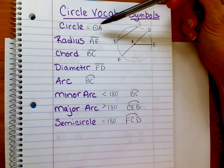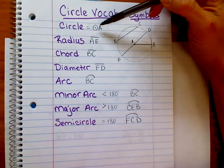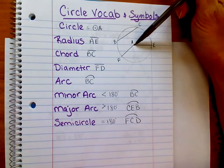When abbreviating circle, we write it as a little circle with a dot in it, kind of like a donut. We'd say circle A. This letter is always referring to the center of the circle.